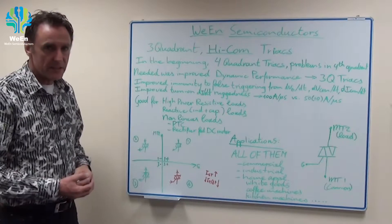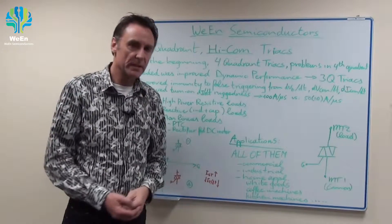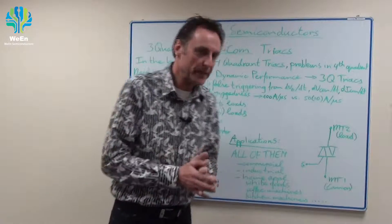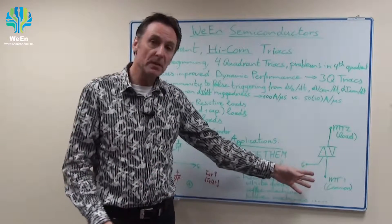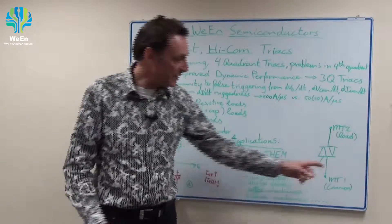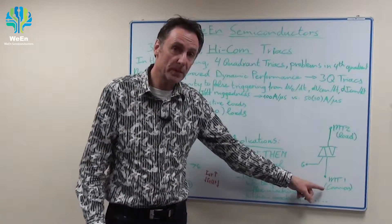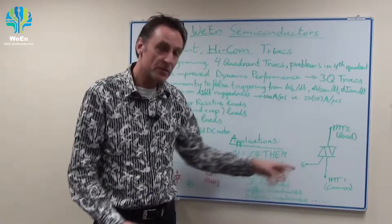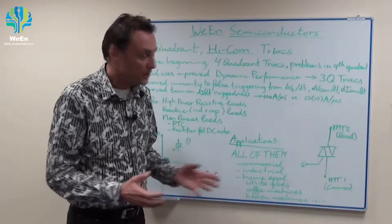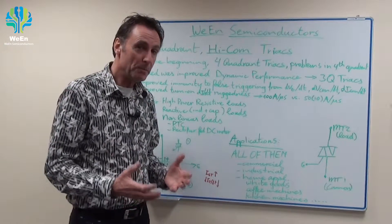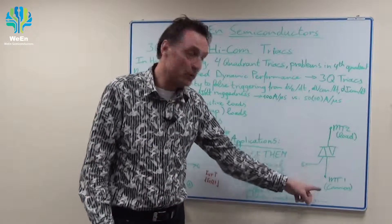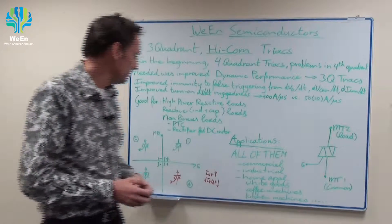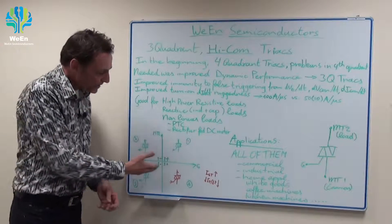In the beginning the industry made four quadrant triacs but four quadrant triacs had a problem in the fourth quadrant. Let me explain. This is the symbol of a triac. We have main terminal one, the common terminal, we have main terminal two connected to the load and the gate to trigger the triac. A triac is a bi-directional power device. It conducts load current in both ways so it's used for AC mains applications.